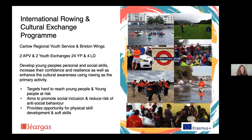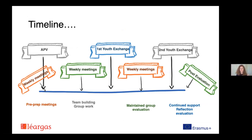They wanted to engage young people in activities that would promote social inclusion, reduce the risk of anti-social behavior, and provide opportunities to develop both soft skills and physical rowing skills. The project had a clear four-month preparation timeline: a meeting with young people and parents in both countries explaining the overall objective, telling them about the other organization, so young people could think about it and apply if they wanted to participate.